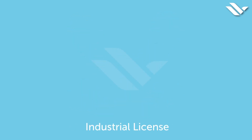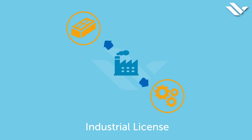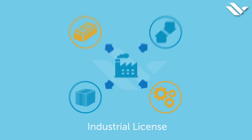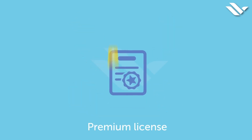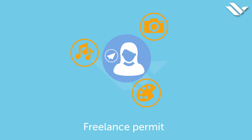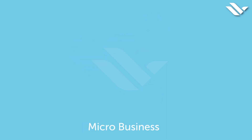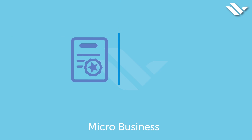Industrial license allows the holder to import raw materials, carry out manufacturing, processing, assembling and packaging of specified products, and export the finished product. Premium license, for special or premium consultancy and commercial activities. Freelance permit — this allows you to conduct business in your own name as opposed to a brand name. Micro business — in this type of license, a commercial license or consultancy license is granted without residence visa eligibility.